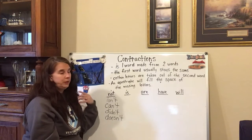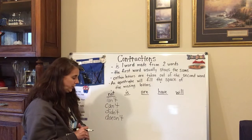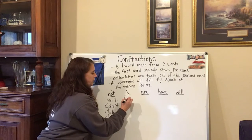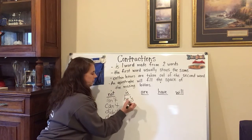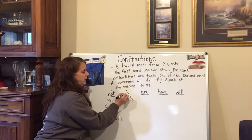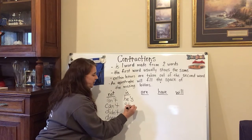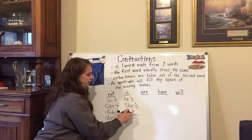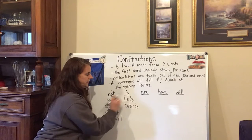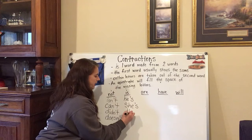Let's go ahead and go to 'is' — when we're adding 'is' as your second word to the next word. For example, 'he is' becomes 'he's.' 'He' stays the same, and the apostrophe is taking the place of the I in 'is.' He's. She's — same thing. 'She' stays the same, and the apostrophe is taking the place of the I in 'is.' He's, she's, that's.